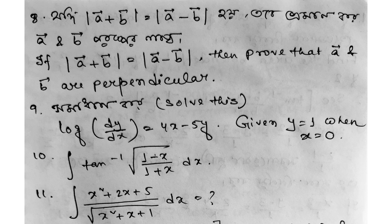Next question: log dy dx equals 4x minus 5y, given that y equals 1 when x equals 0. Another question: integration of tan inverse root over 1 minus x divided by 1 plus x dx. Next: integration of x square plus 2x plus 5 divided by root over x square plus x plus 1 dx.